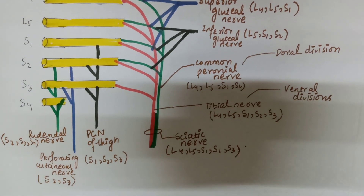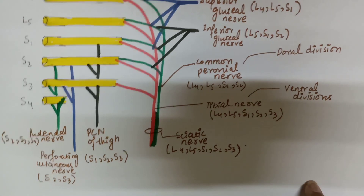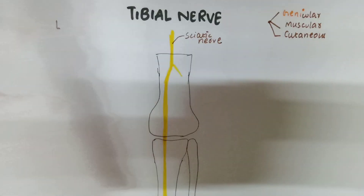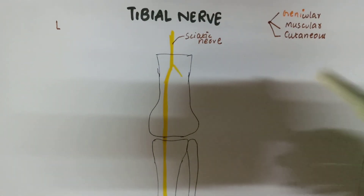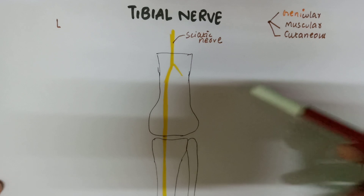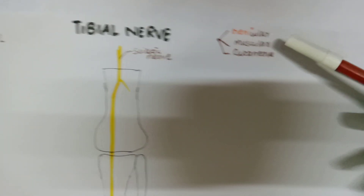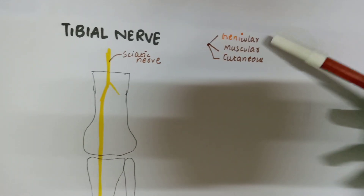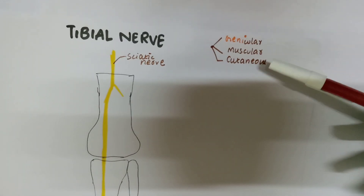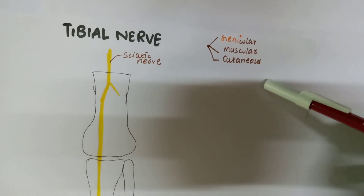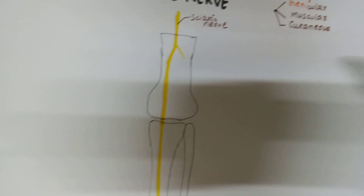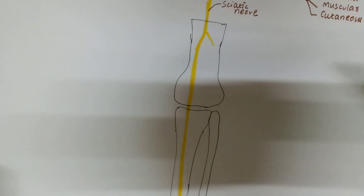If you haven't watched the sacral plexus video, I will mention the link in the description. The tibial nerve basically gives off three types of branches: genicular branches, muscular branches, and cutaneous branches.